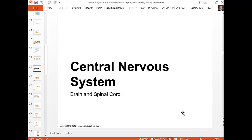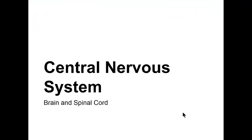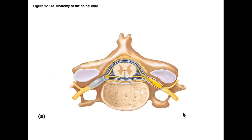We're going to pick up with the central nervous system today, which is made up of the brain and spinal cord. We talked about action potentials, graded potentials, and how we stimulate a neuron to bring information from the outside and carry that information onward through neurons. Now we're going to talk about the central nervous system that receives that input and carries it along for processing.